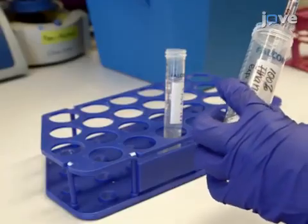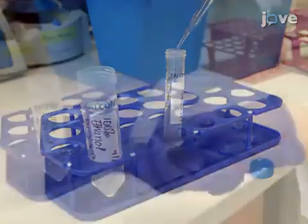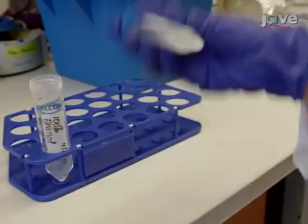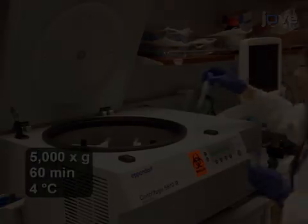Add 2 volumes of 100% ethanol and mix by inverting the tube 6 to 8 times. Centrifuge at 5,100 times G for 15 minutes at room temperature.